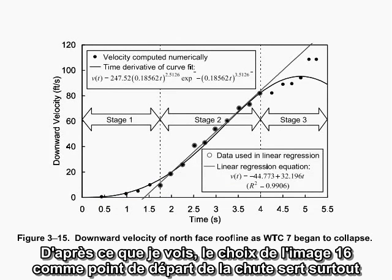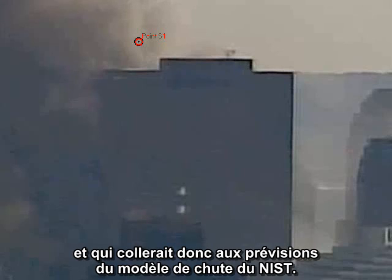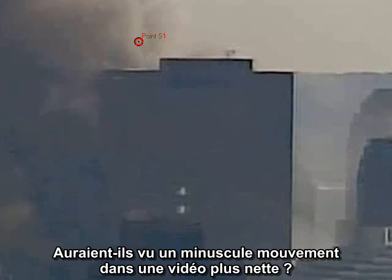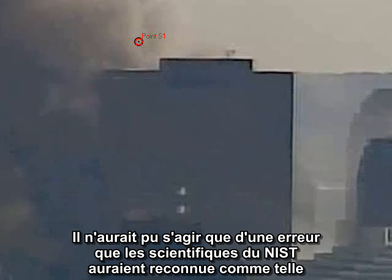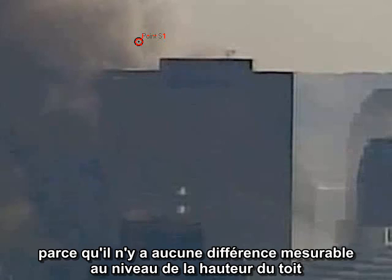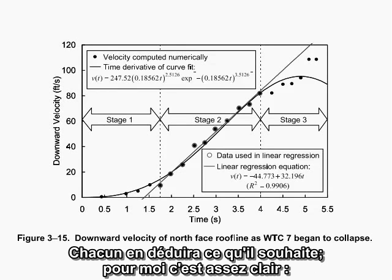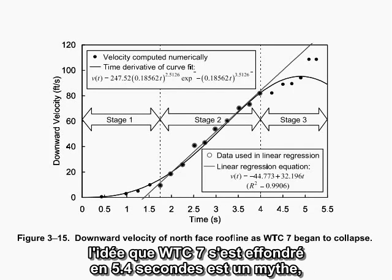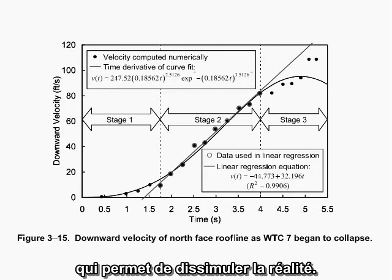The only rationale I can see for choosing frame 16 to start the clock is to make the measurement come out to exactly 5.4 seconds, to agree with the prediction of NIST's collapse model. But what if I'm wrong? What if they did see some tiny movement on a clearer version of the video? That tiny movement, whatever it might have been, did not last. It would have had to have been a glitch, and the scientists at NIST would recognize it as a glitch, because there's no measurable difference in the height of the roofline for the next 20 to 30 frames. What can we conclude? I think it's pretty clear that the whole idea that there is any kind of real 5.4-second collapse interval is a fiction — a crude fabrication, and the three-stage collapse sequence is pseudoscience in the service of an ongoing cover-up.